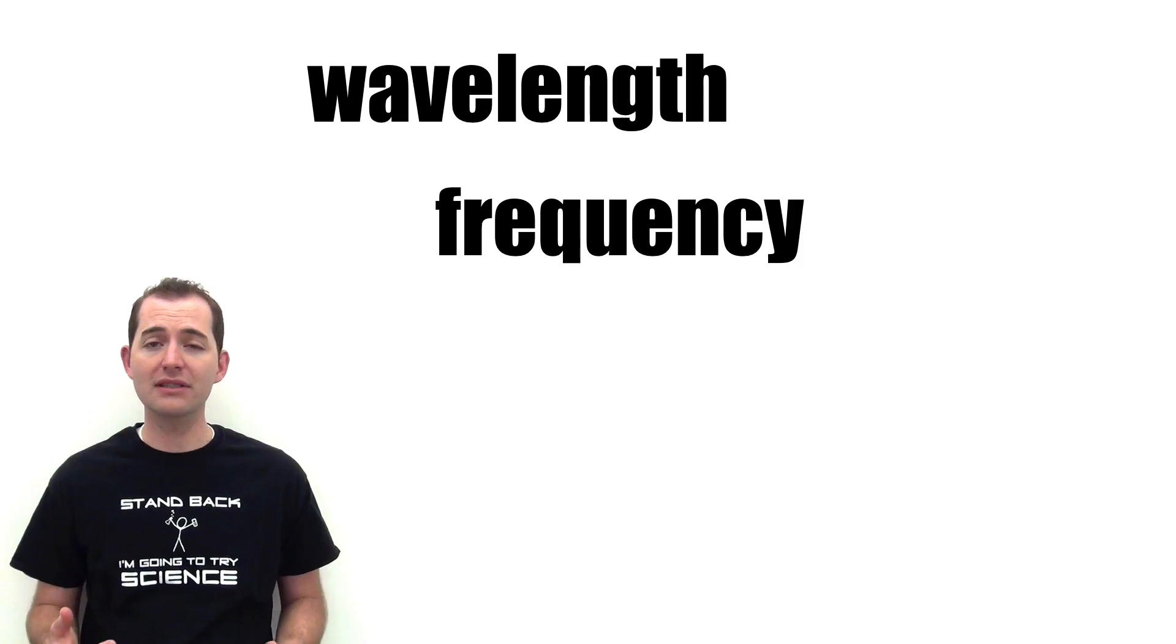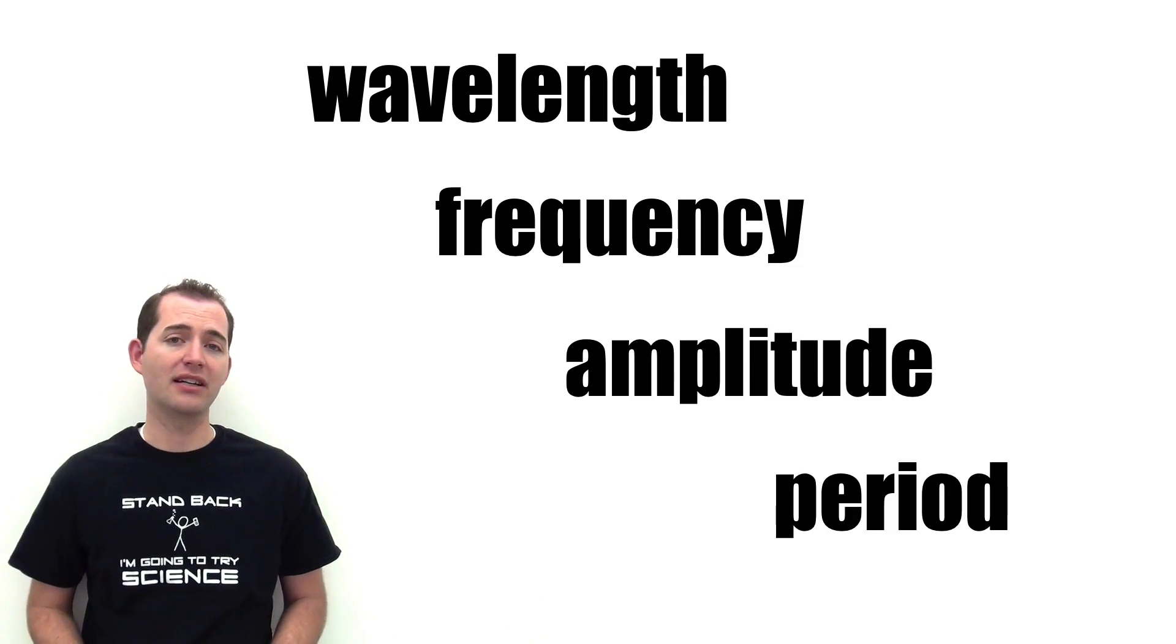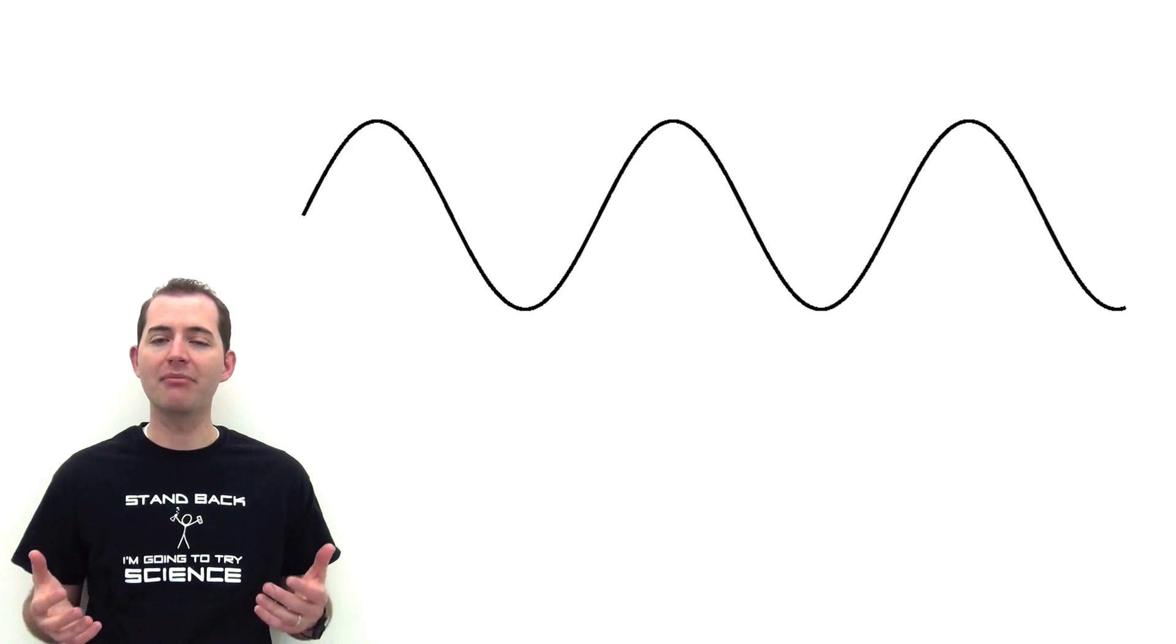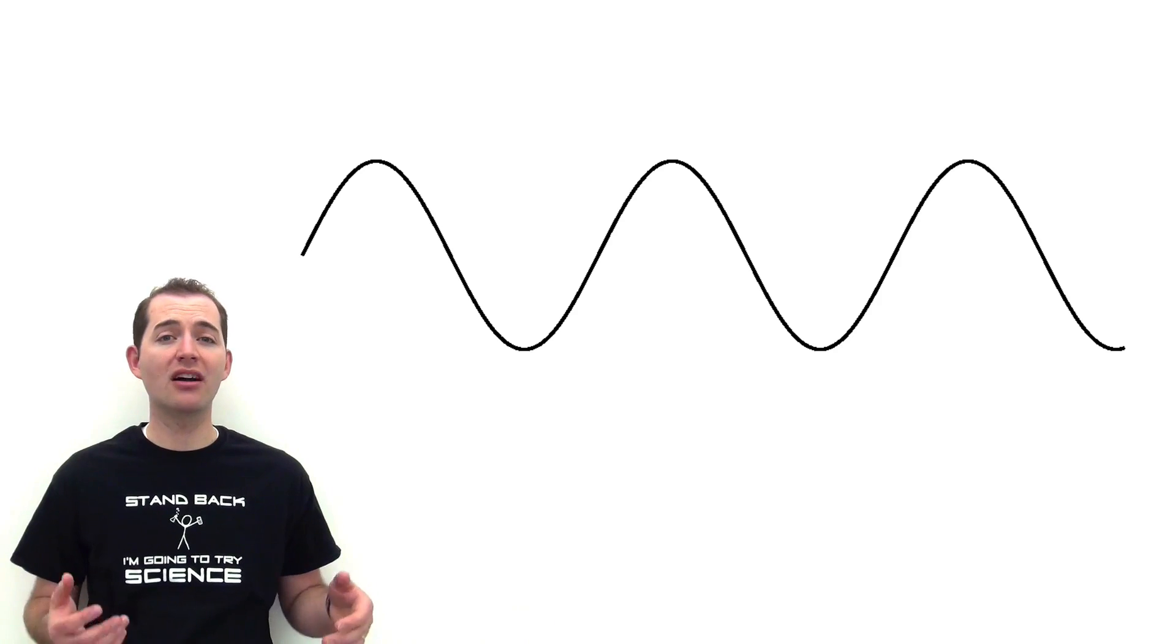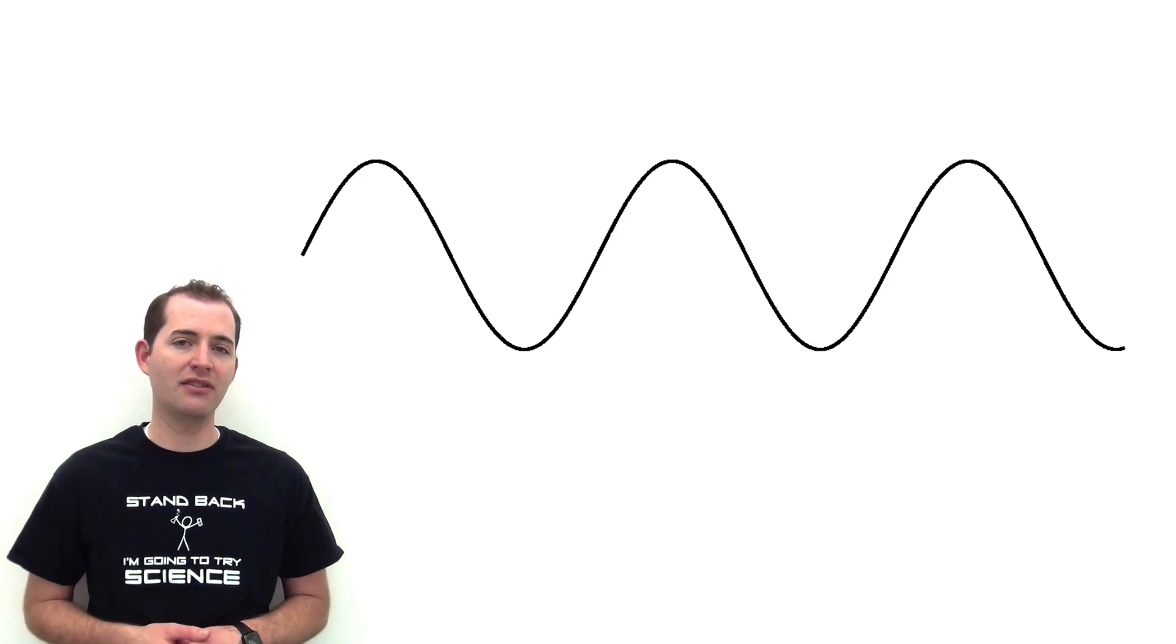Let's look at a few important properties and definitions that help us to better understand and quantify waves. These key terms are wavelength, frequency, amplitude, and period. We will use a basic model of a wave to help us understand and see these definitions.